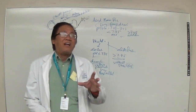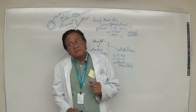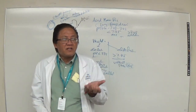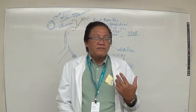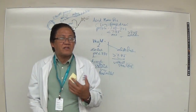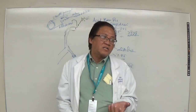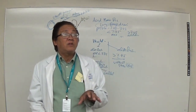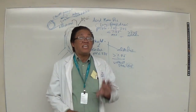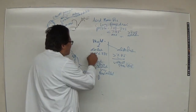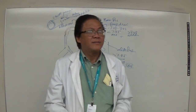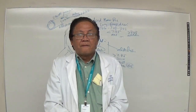In type 1 diabetes mellitus, glucose cannot enter the cell because there is absolutely zero insulin. The cell is starved of glucose and uses fat as an alternate energy source. When fat is utilized, ketone bodies are produced — ketone bodies are acidic. This is called diabetic ketoacidosis, which is a form of metabolic acidosis.